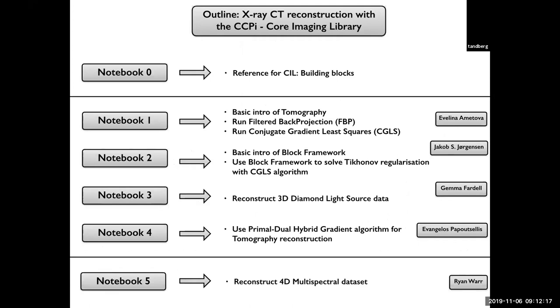We'll start with Evelina that will introduce a little bit of tomography, run FBP reconstruction and CGLS. Then we will go to Tikhonov regularization and introduce the block framework. Then we will run real data from the diamond light source and then go to the PDHG and run a total variation reconstruction.